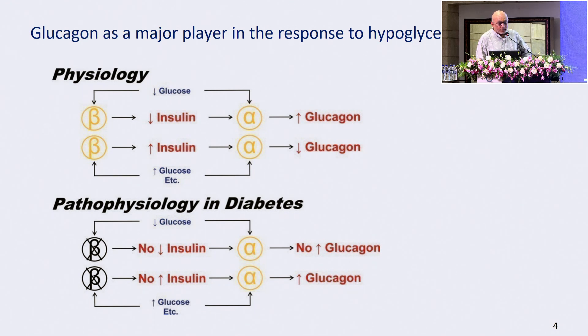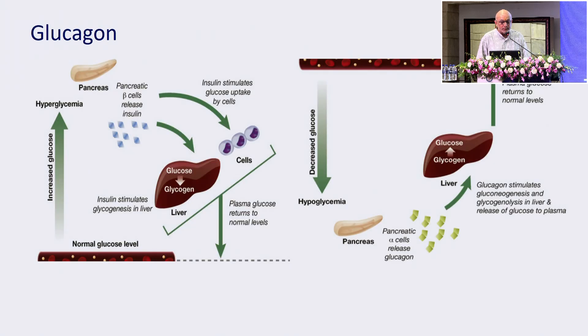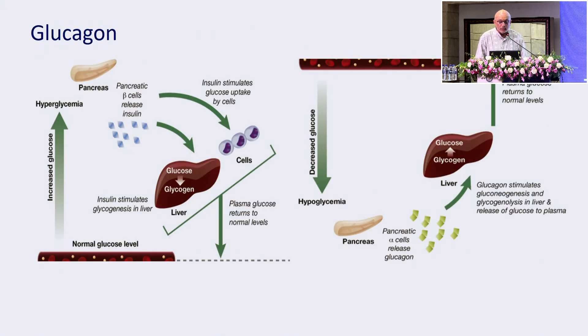In diabetes, there's no decrease in insulin and no increase in glucagon. There is no increase in insulin, and there's an increase in glucagon. That's really what's happening in diabetes.